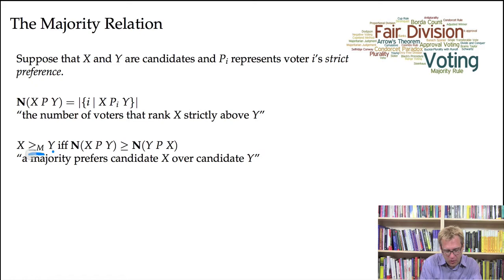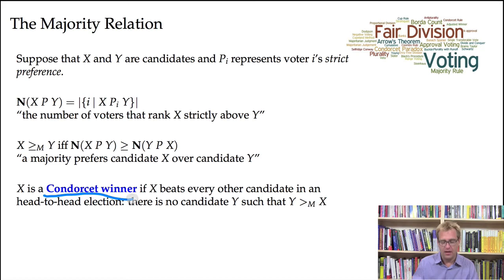And we're going to say that X is at least as good as Y according to this group majoritarian relation, or their Condorcet relation, just in case the number of people that rank X above Y is greater than or equal to the number of people that rank Y above X. So that's just to say that a majority prefers X over Y. The reason I'm writing greater than or equal to here is that our population might have an even number of people, and then it's quite possible that exactly half of the population ranks X above Y, and the other half ranks Y above X, in which case these two numbers will actually be equal. So we would say that X and Y have equal support in the society.